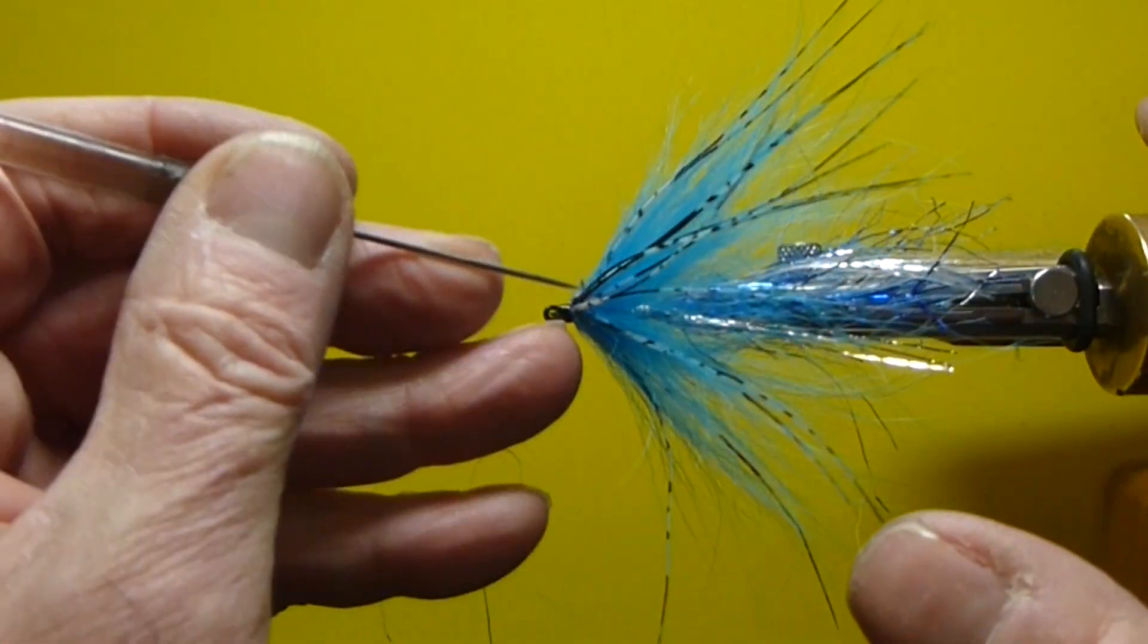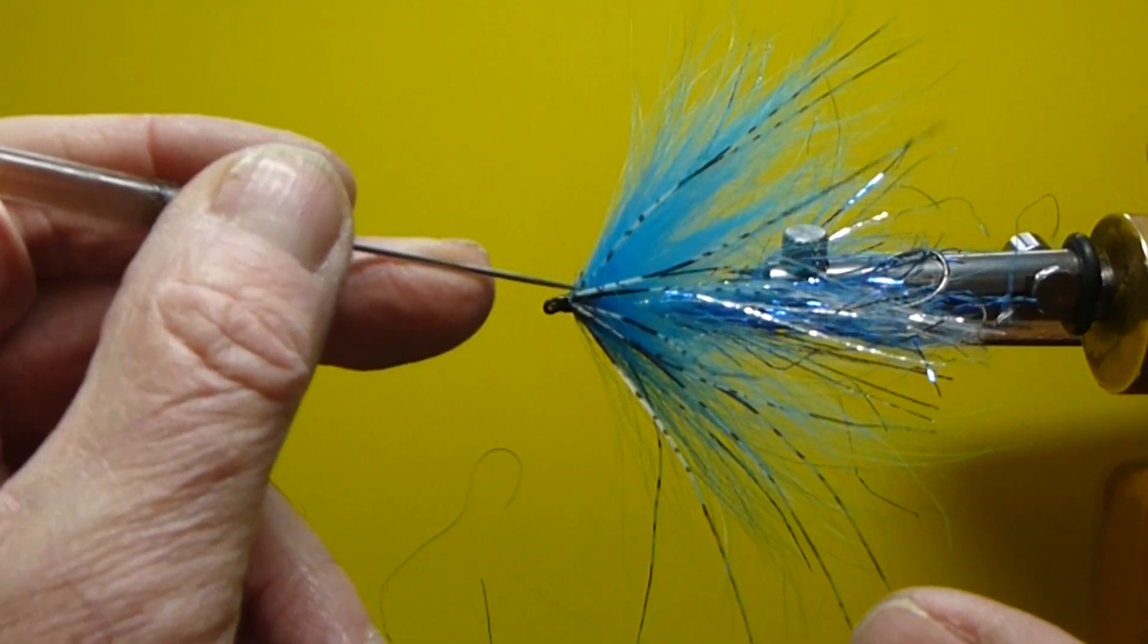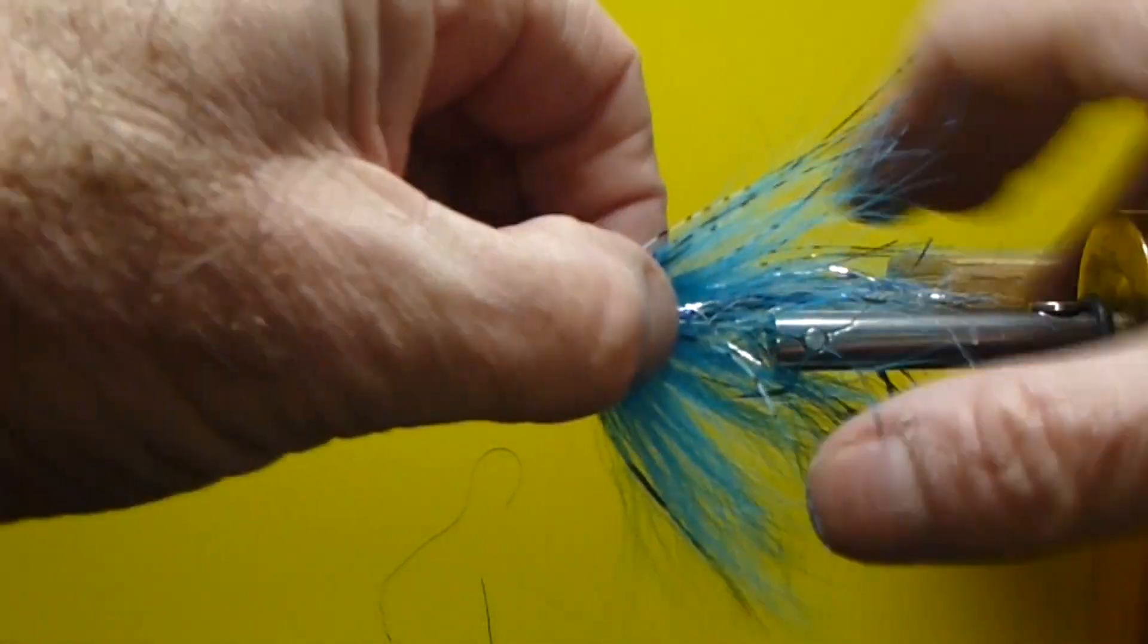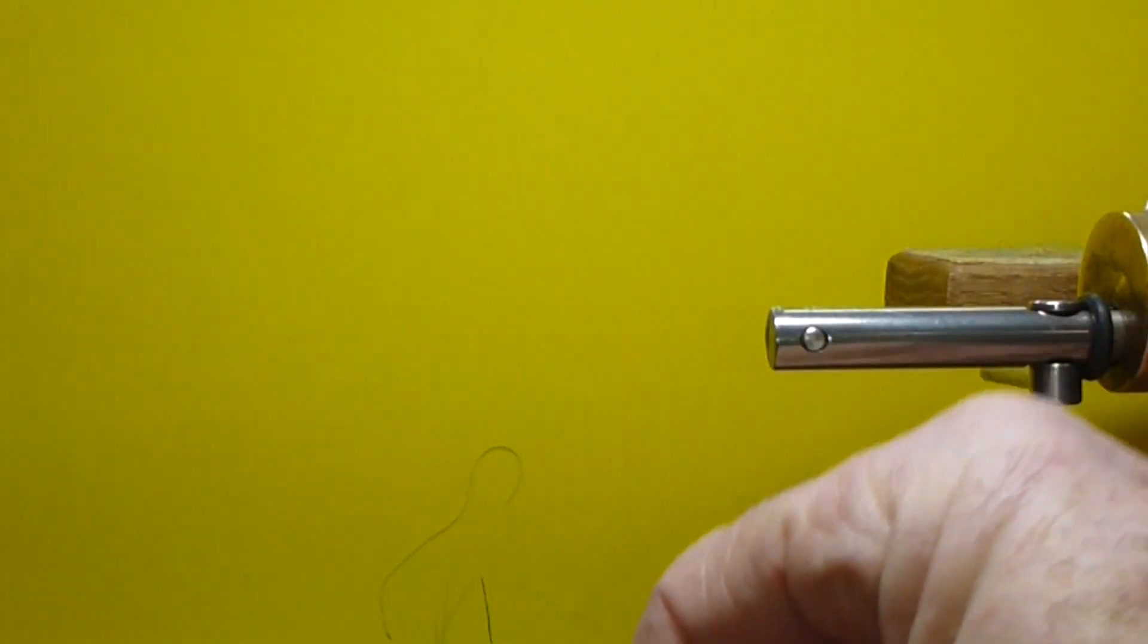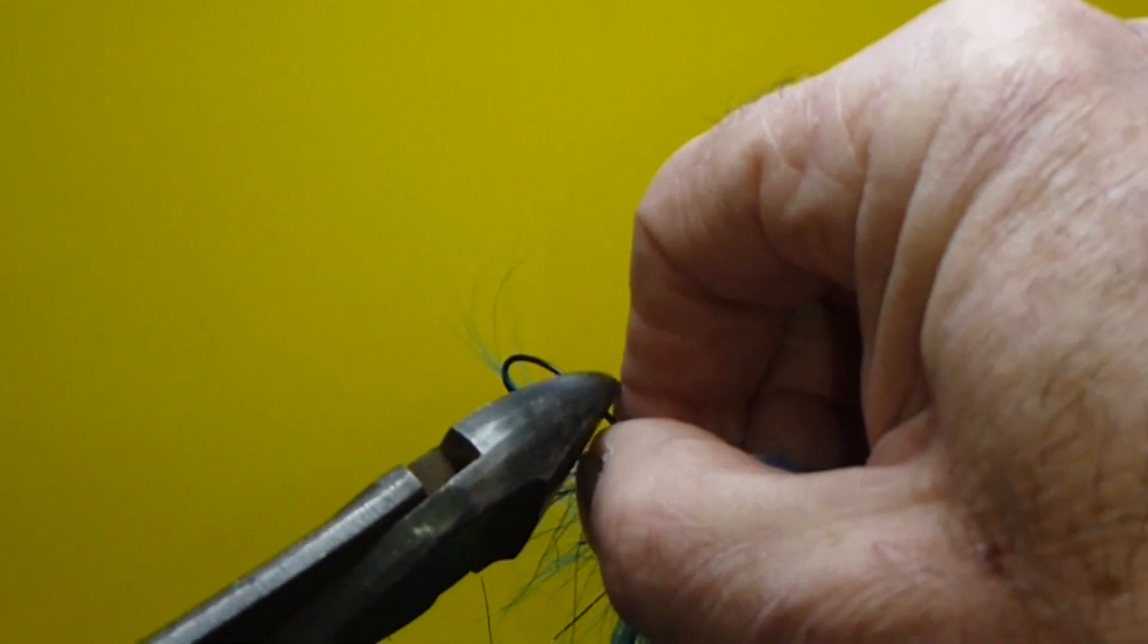So you can bring in a bodkin needle. You can separate these feathers out a little bit more. Excuse me. And so now what I'll do is bring in my nippers. Cut off the hook on the front.